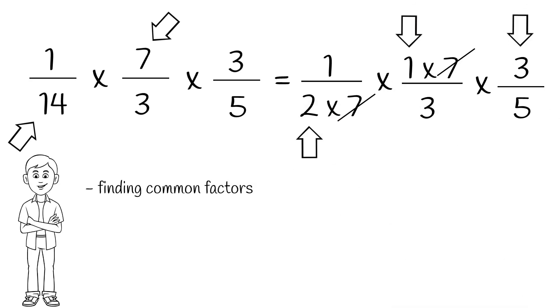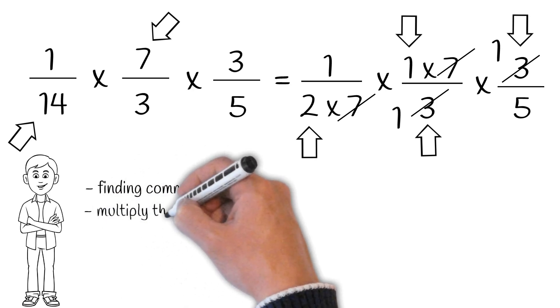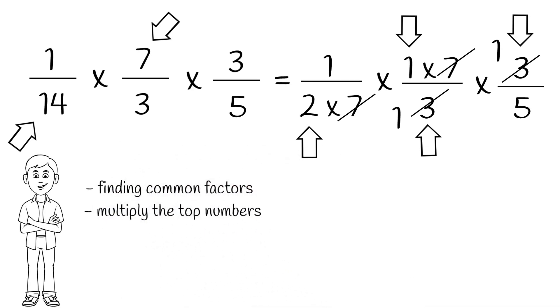But wait. What about 3 and 3? Can we cross them out too? Yes. Since two of the same numbers divided together gives us 1. Now we can apply our procedure. Multiply all the top numbers together, and then multiply all the bottom numbers together. And we'll have our answer.